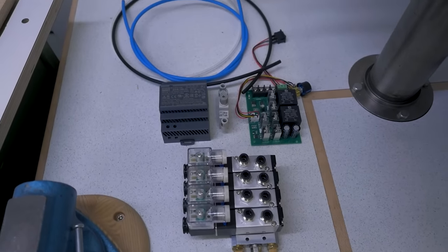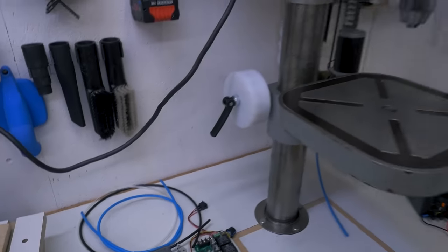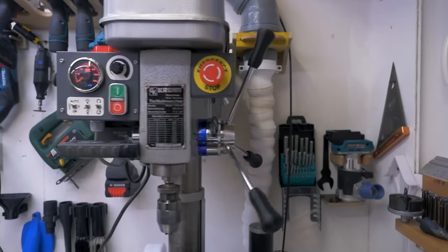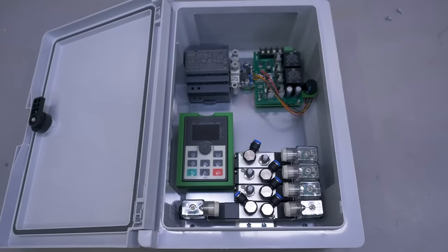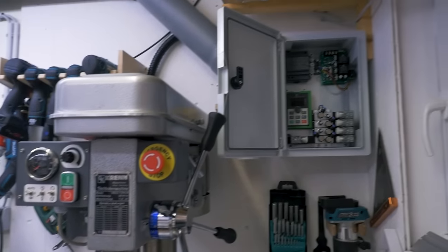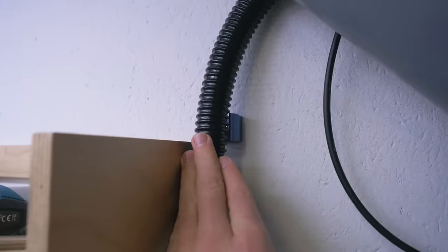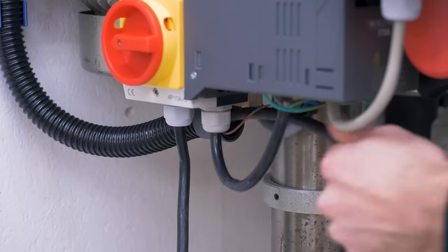At this point, I realized that I have to mount and wire up all the stuff somewhere on the machine and protect it from chips and dust, which isn't going to happen. So I put everything into a case, mounted it to the wall next to the machine, and run all the hoses and wires through a tube. Much more organized.